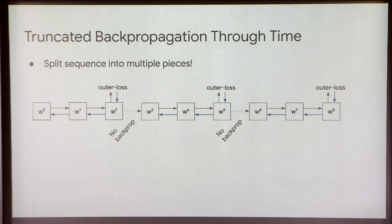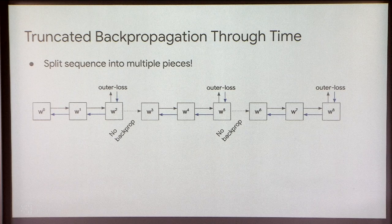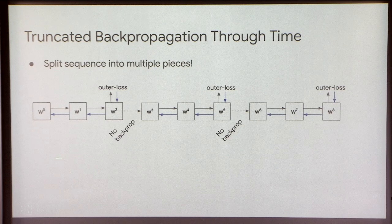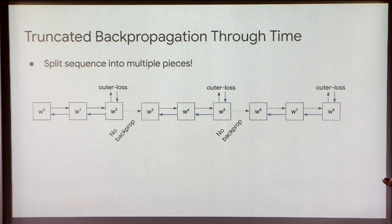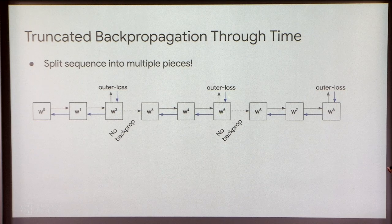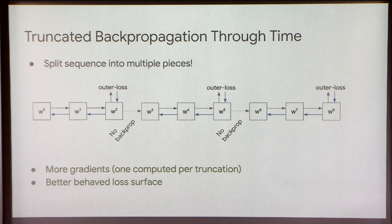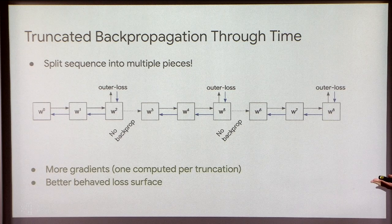Typically when people are training a dynamical system such as an RNN or in learned optimization, they make their lives easier by performing truncated backpropagation through time. In truncated BPTT, you take your inner optimization process, run it for some number of steps, and rather than going all the way to the end before computing your outer loss, you compute your outer loss after some fixed number of steps — say two — then backprop through those two steps. You then initialize where you ended up last time, run for another two steps, backprop through those two steps, and repeat.